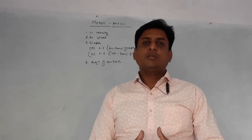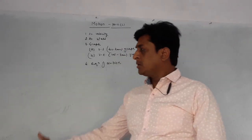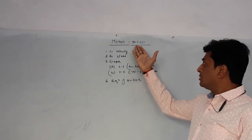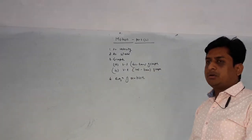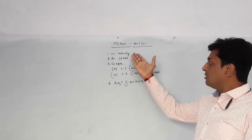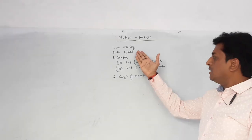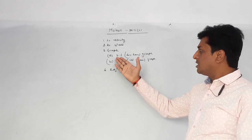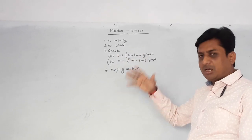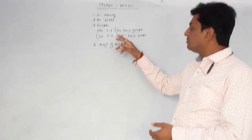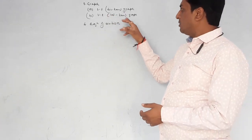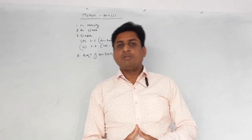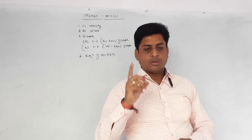Hello my dear students of class 9. Today I am going to start the same chapter, motion, with the second part. In this part I will tell you about average velocity, average speed, and two types of graphs — distance-time and velocity-time — as well as the equations of motion.